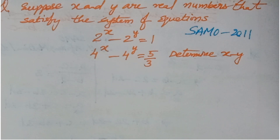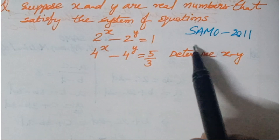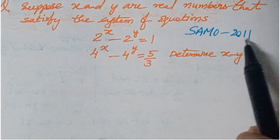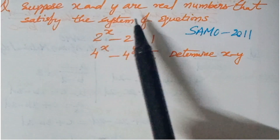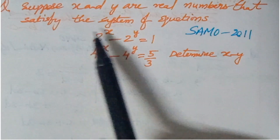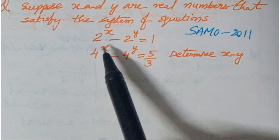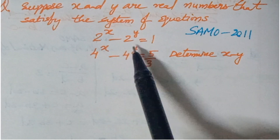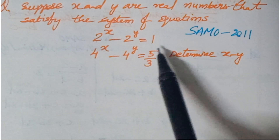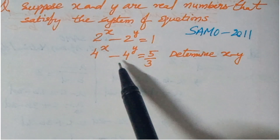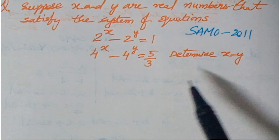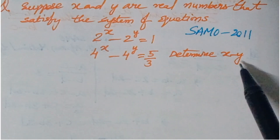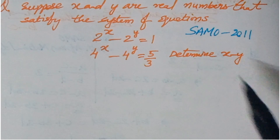Hello and welcome back to Ion's AG Max. Today we are going to see one question from South African Math Olympiad. The question is: given that x and y are real numbers that satisfy the system of equations — 2^x minus 2^y equals 1, and 4^x minus 4^y equals 5/3 — find the value of x minus y.